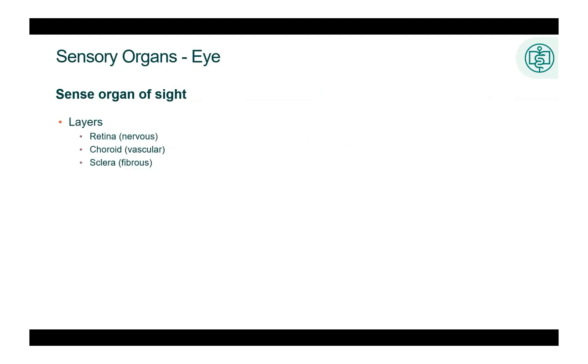Organs of sense are classified as a subsection of the nervous system. The sensory organs receive and filter sensory input that is interpreted in the central nervous system. Organs of sense include the eye and the ear.